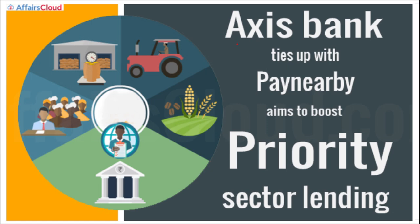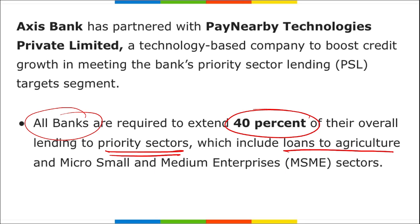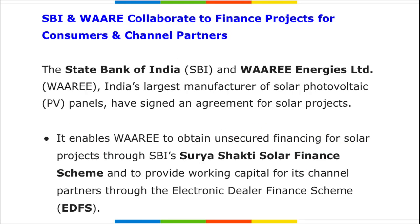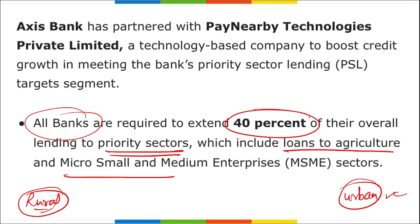Axis Bank has tied up with PayNearby to boost priority sector lending. All banks are required to extend 40% of their overall lending to priority sectors, including agriculture and MSME. With this partnership, Axis Bank can reach customers in remote rural areas where digital awareness is low and provide banking solutions digitally.